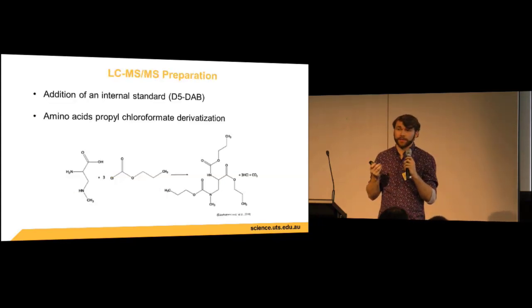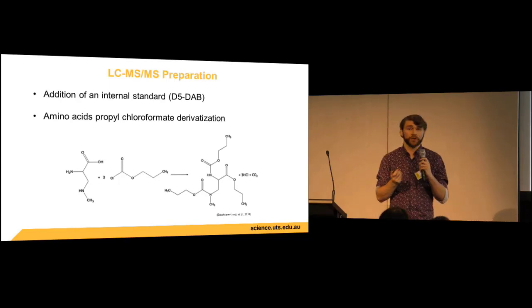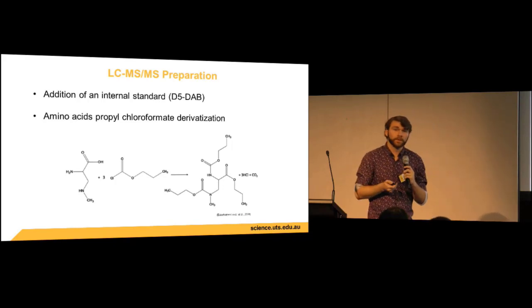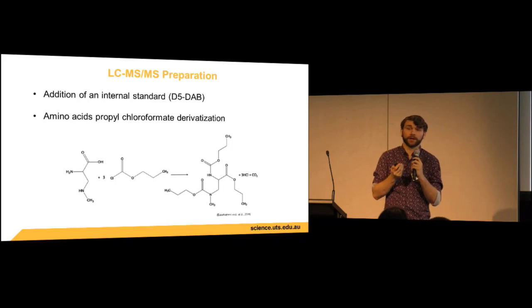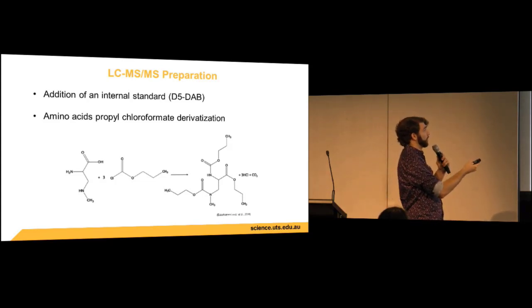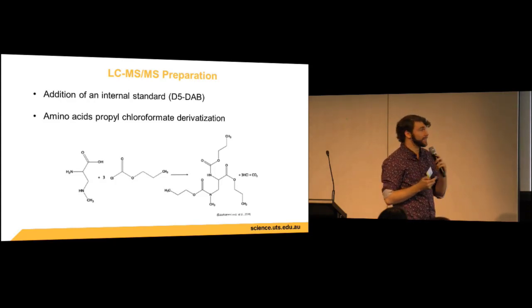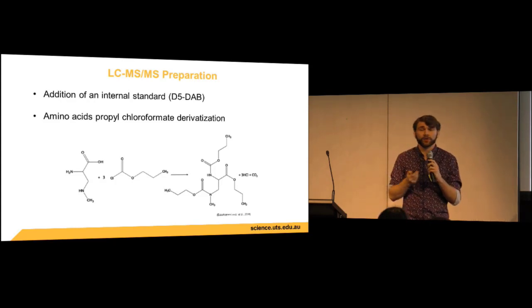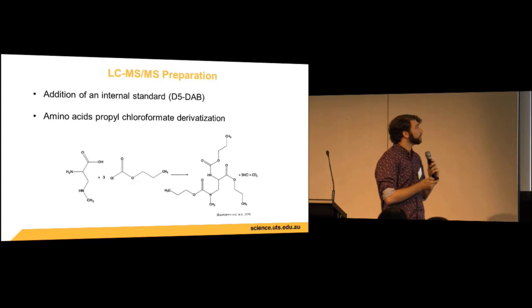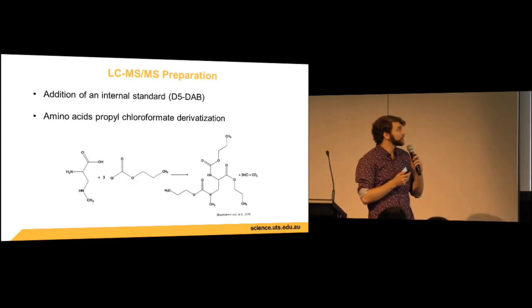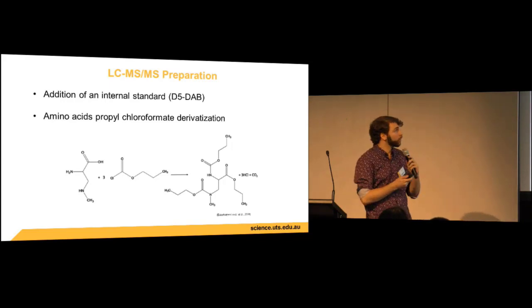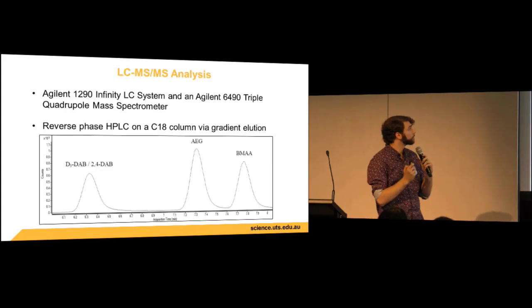Before mass spectrometry, we needed to derivatize our amino acids. We first added an internal standard of deuterated DAB (heavy DAB), then all amino acids underwent propyl chloroformate derivatization. Amino acids are quite hard to analyze via HPLC, so derivatization significantly increases their size making them easier to analyze in a mass spec, reduces signal-to-noise ratio, improves sensitivity, and allows separation of amino acids with similar physicochemical properties. We used the EZ:faast derivatization kit from Phenomenex, which included a solid phase extraction cleanup. The internal standard accounted for both instrumentation error and any loss during solid phase extraction.